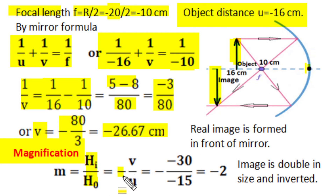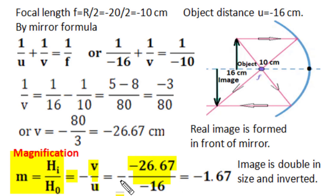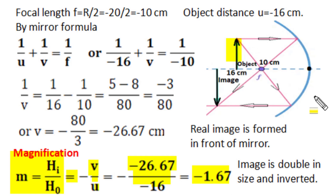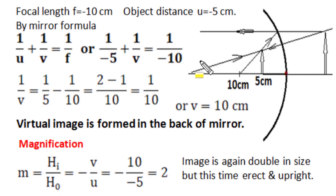Using the magnification relation: m = −v/u = −(−26.67)/(−16) = −1.67. The negative magnification confirms the image is inverted — opposite in direction to the object. The magnitude 1.67 indicates the image is enlarged, approximately 5/3 times the object height. So if the object height is 3 cm, the image height would be 5 cm. The image is real, inverted, and magnified.